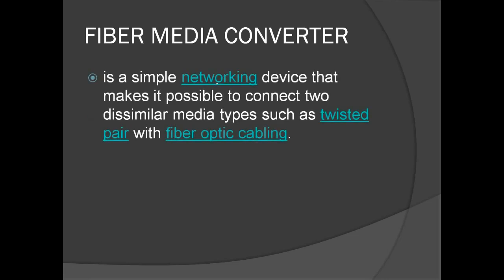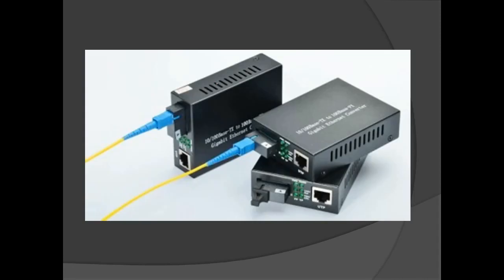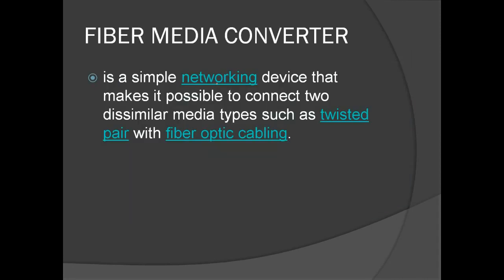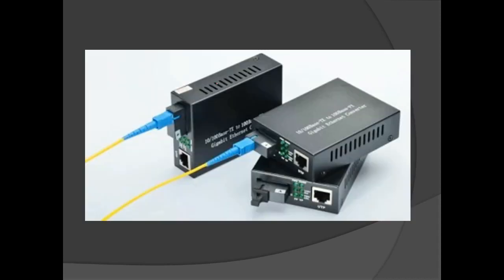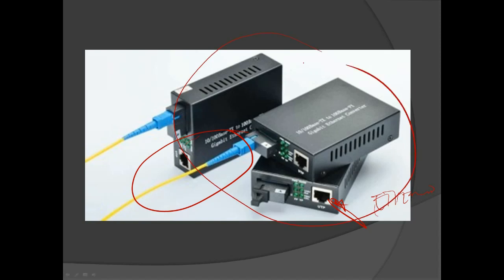We also have the fiber media converter — a simple networking device that makes it possible to connect dissimilar media types such as twisted pair with fiber optic cabling. This converter converts your fiber signal — represented by light wave — into an Ethernet electronic signal.